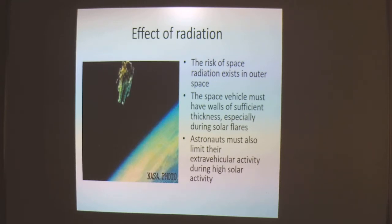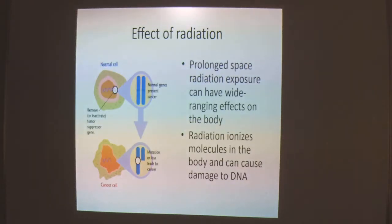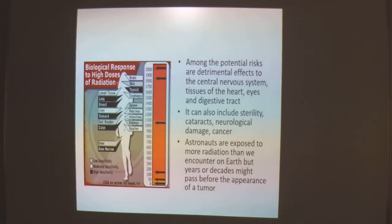As we have effects from microgravity, in space the person is also affected by radiation. The risk of space radiation exists in outer space. The space vehicle must have walls of sufficient thickness, especially during solar flares. Astronauts must also limit their extravehicular activity during high solar activity. Prolonged space radiation exposure can have wide-ranging effects on the body — radiation ionizes molecules in the body and causes damage to DNA, leading to mutations and increased risk of cancer. Among the potential risks are detrimental effects to the central nervous system, tissues of the heart, eyes, and digestive tract. It can also lead to sterility, development of cataracts, neurological damage, and cancer.